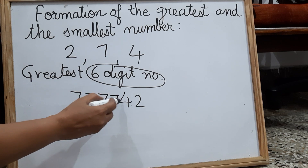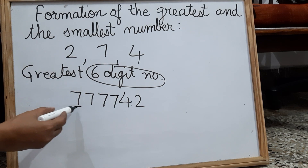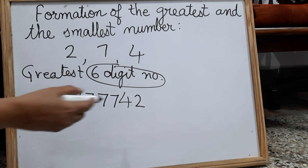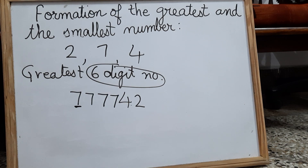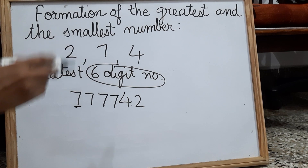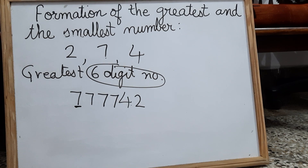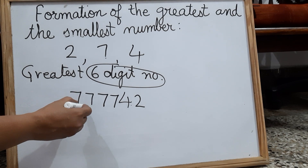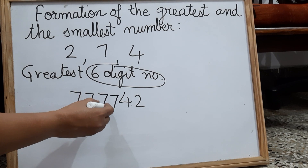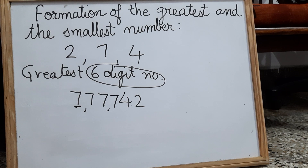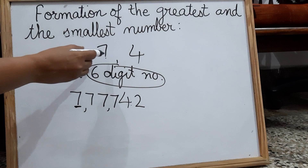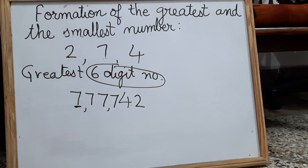We repeat seven four more times to fill all six places — one, two, three, four, five, six. So the number is 7,77,742 — the greatest six digit number using the digits two, seven, and four.